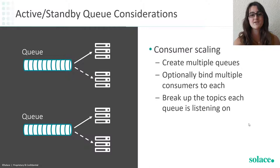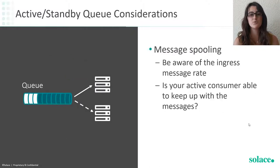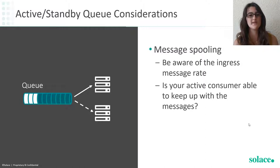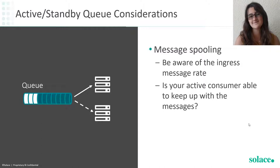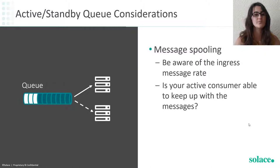The next consideration is message spooling. You should be aware of the ingress message rate — the rate at which messages are being saved to the queue. Is the active consumer of that queue able to keep up with that ingress message rate? If not, you may want to look at the consumer scaling piece and break up what that queue is listening on.